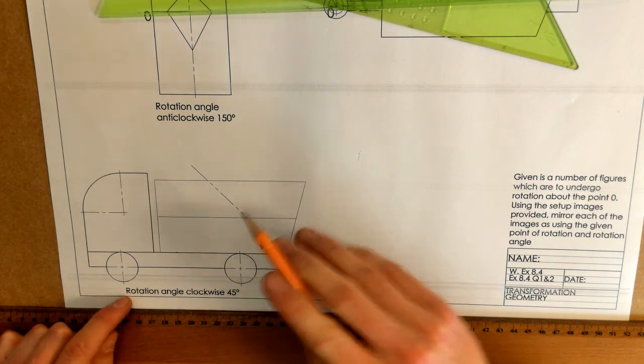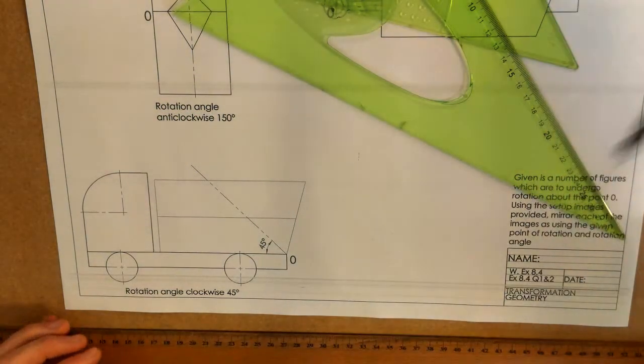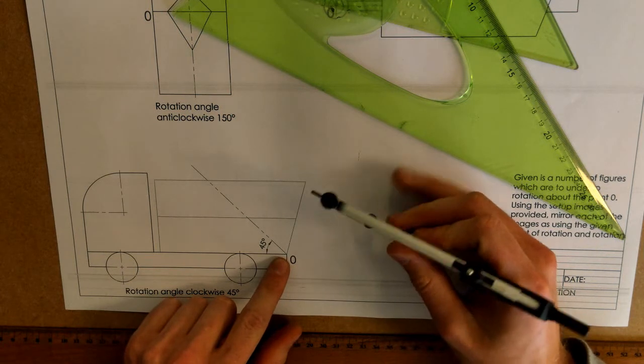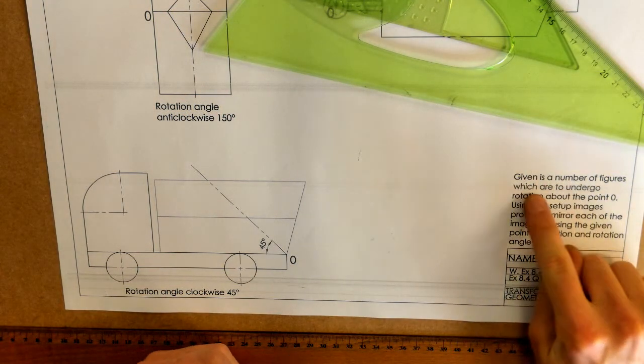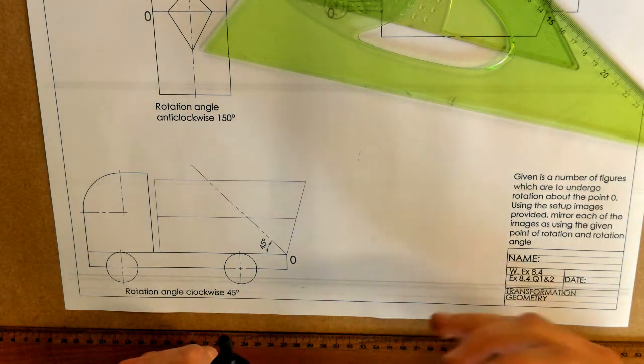So, we'll start off here with the bucket. The bucket is the question it asks us to do on this one. First thing I'm going to do is, with my compass, point O is going to be the point of rotation. So, it tells us there, given is a number of figures which are to undergo rotation about the point O. That means that the point O is the point of rotation.